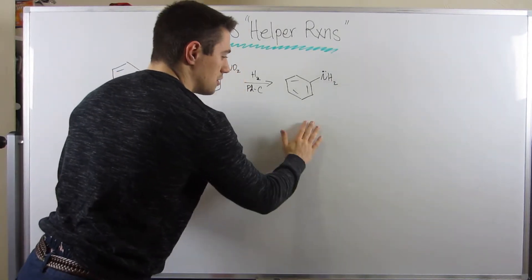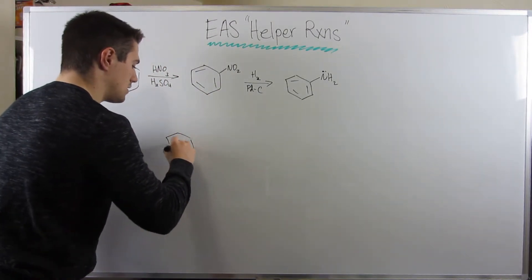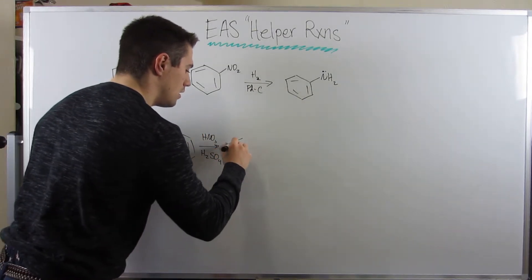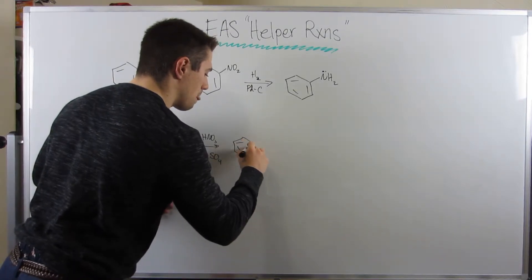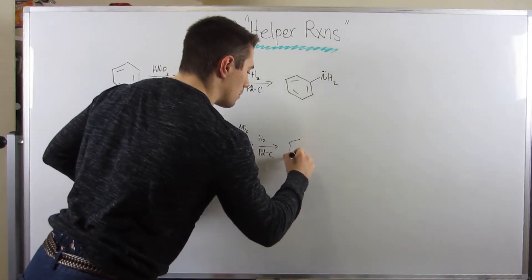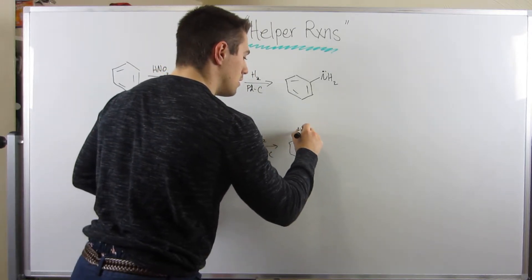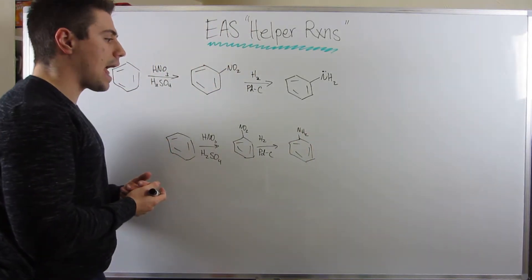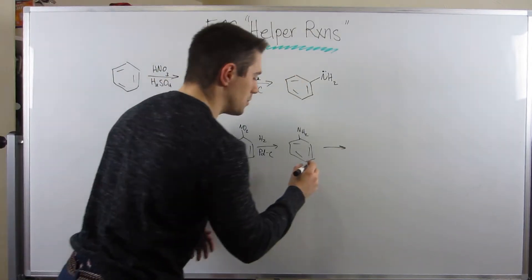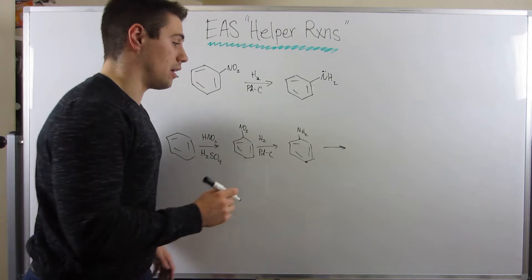So here's where that can get us into some trouble. Let's say we were using that same strategy like we just did. We had this NO2. So let's say we added a nitro group, a little H2SO4. We add a nitro group. We then reduced the nitro group with H2PDC. And instead of trying to add something para, like a bromine, let's say we wanted to add a sulfonyl group. We know they're big and bulky, so there's no chance of them going ortho. It would definitely go para.